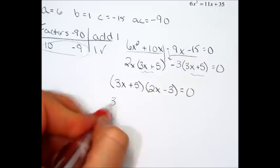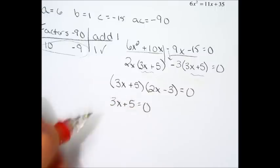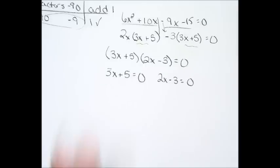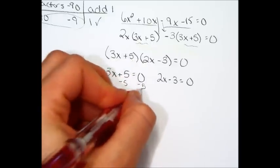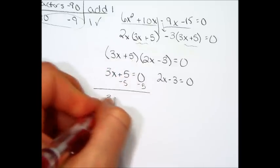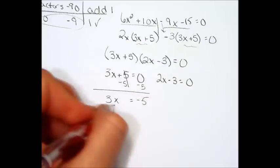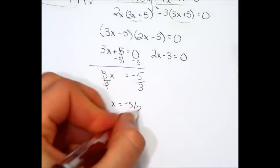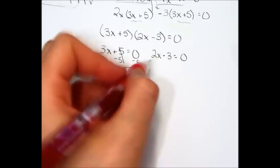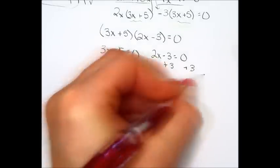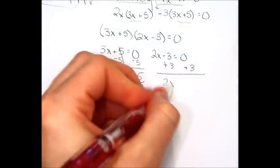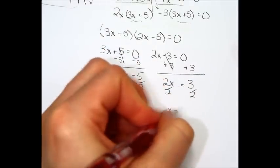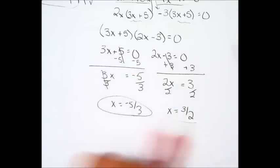The last thing you do is set each one equal to 0, since there is an equal sign now, and solve. So this first one minus 5 and minus 5. 3x equals negative 5. Divide by 3, divide by 3. x is negative 5 thirds. On this one, add 3 and add 3. 2x equals 3. Divide by 2, divide by 2. Always reduce if you can. And then, x is 3 over 2.